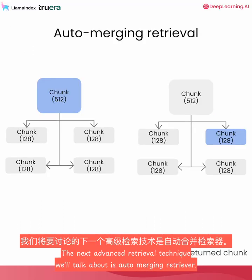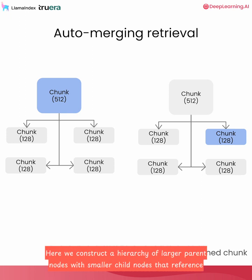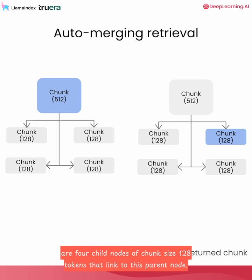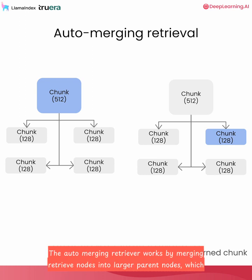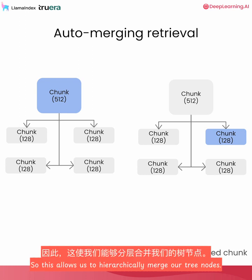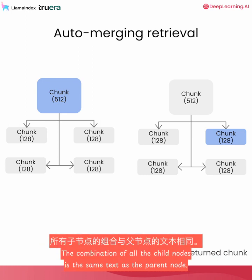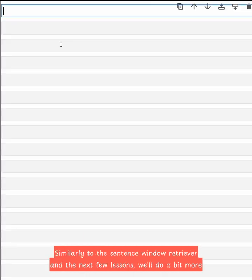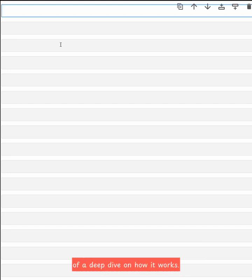The next advanced retrieval technique we'll talk about is the auto-merging retriever. Here, we construct a hierarchy of larger parent nodes with smaller child nodes that reference the parent node. For instance, we might have a parent node of chunk size 512 tokens, and underneath, four child nodes of chunk size 128 tokens that link to this parent node. The auto-merging retriever works by merging retrieved nodes into larger parent nodes — during retrieval, if a parent has a majority of its children nodes retrieved, we replace the children nodes with the parent node. The combination of all child nodes is the same text as the parent node.